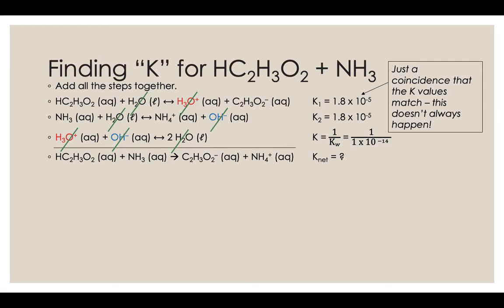We have that first K there is a Ka, the acetic acid reacting with water. The second one, the K2 there, that's a Kb value, ammonia reacting with water. And then the third one is a, since it's the reverse of the auto ionization of water, we take the inverse of Kw.